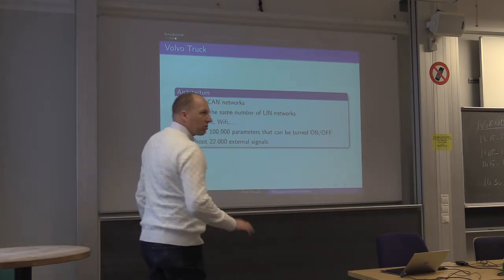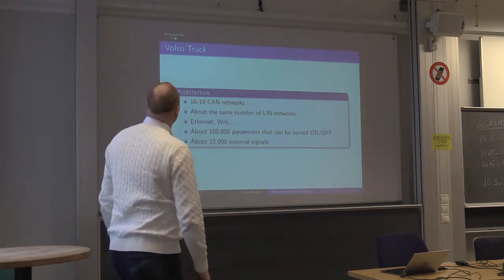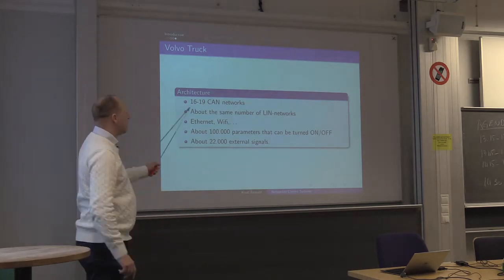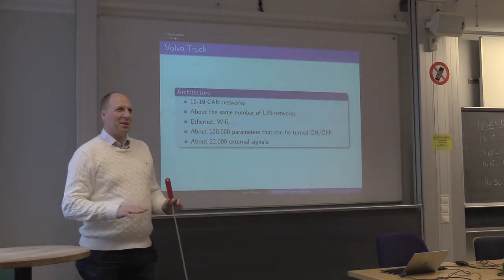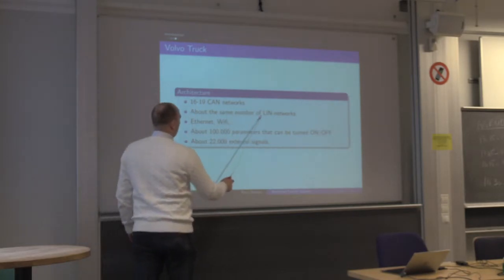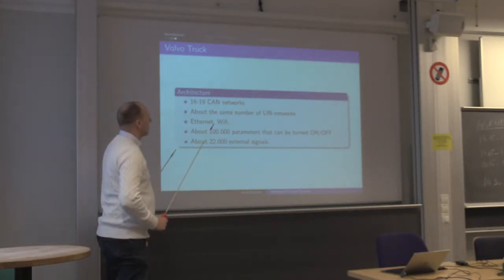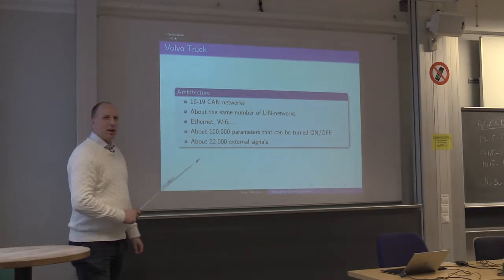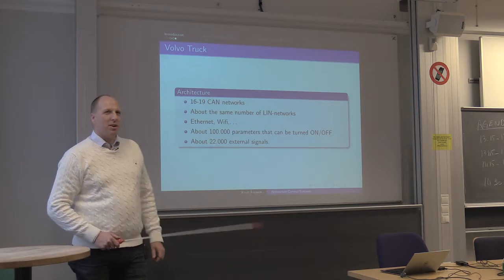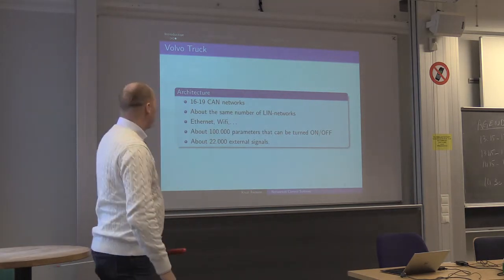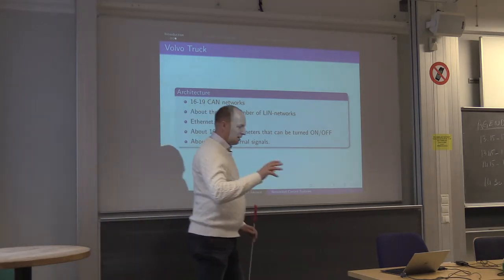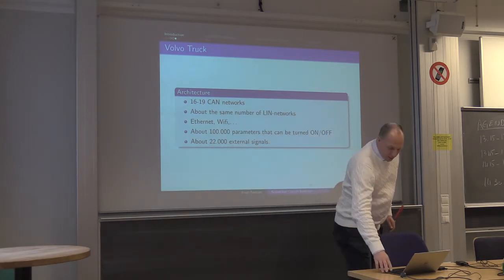If you go to a truck — a Volvo truck, for example — it's not only five or six different communication buses. They have between 16 and 19 different networks in a single vehicle. They also have some LIN networks, which use an even simpler protocol, plus Ethernet and Wi-Fi for other things. They have about 100,000 different parameters that can be turned on and off, and about 22,000 external signals that are sensed by the system.